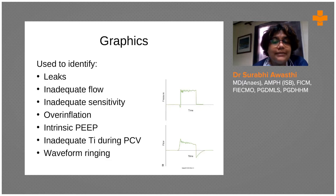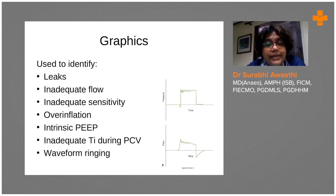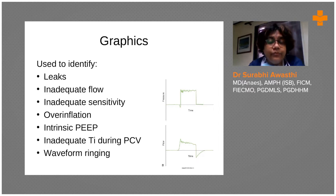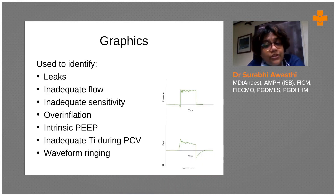When you look at the graphs, you'll be able to see slight fluctuations in the flat area of the graph, which will indicate secretions, leaks, or inadequate flow. The graphs can also help you identify over-inflation and auto-PEEP. During pressure control ventilation, you can see the tidal volumes and whether the inspiration time is adequate.